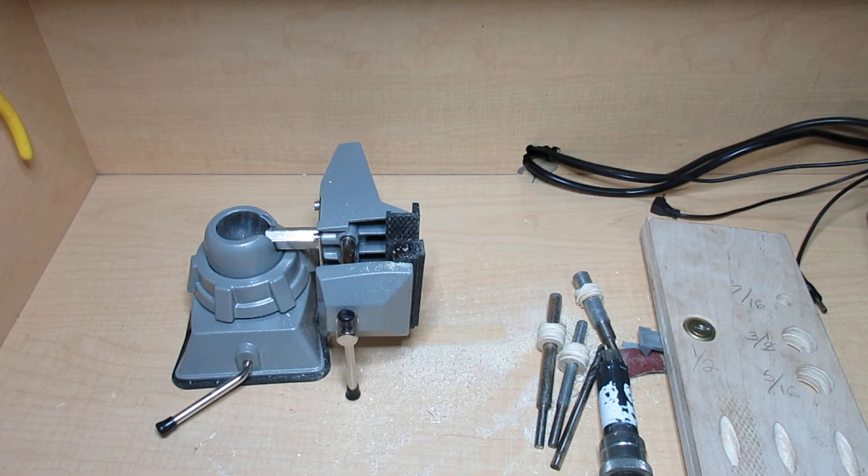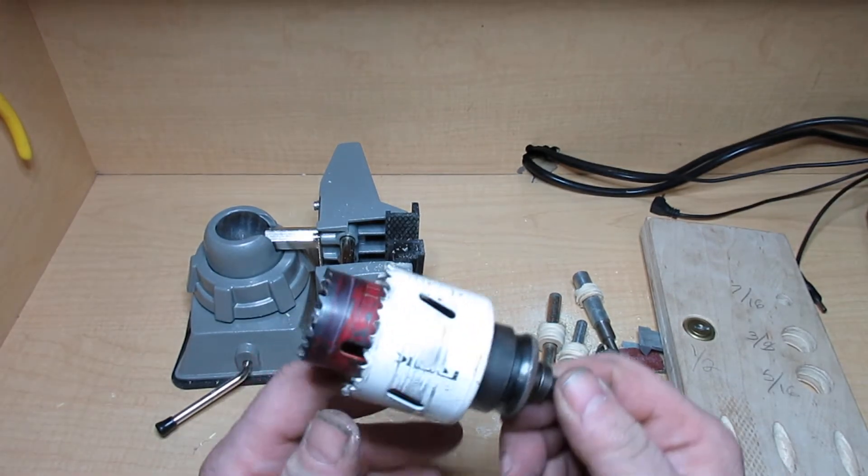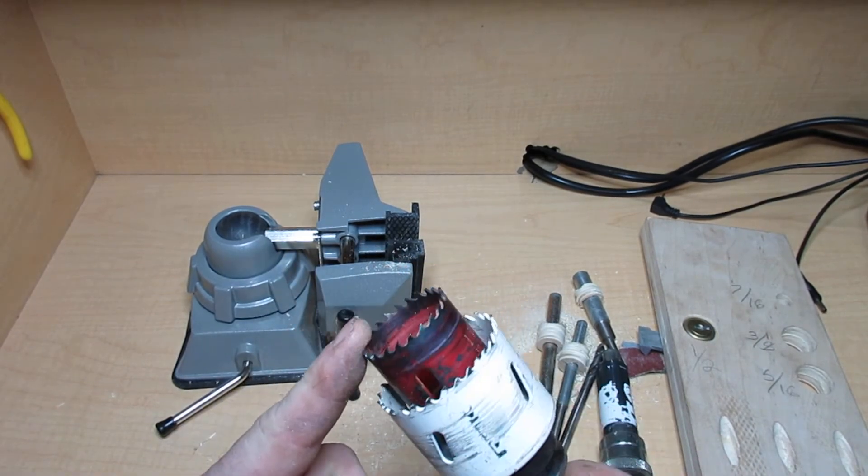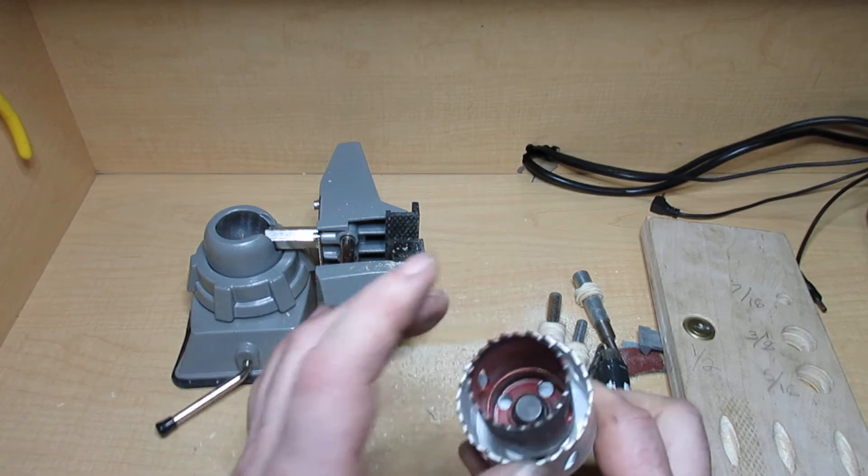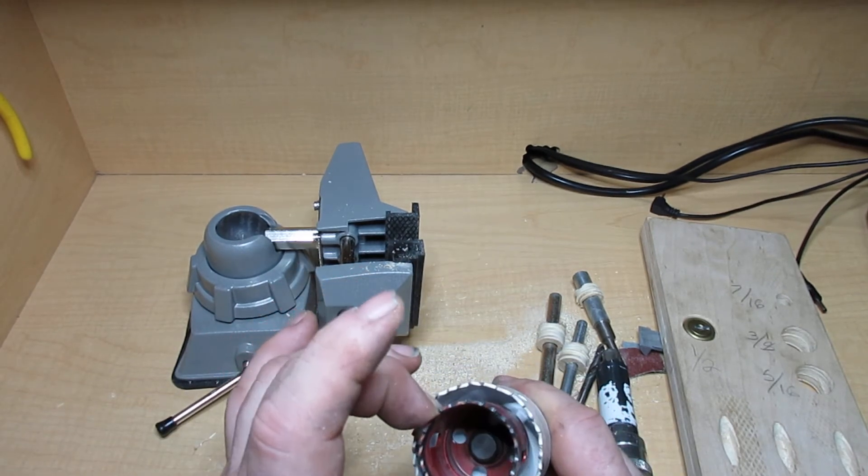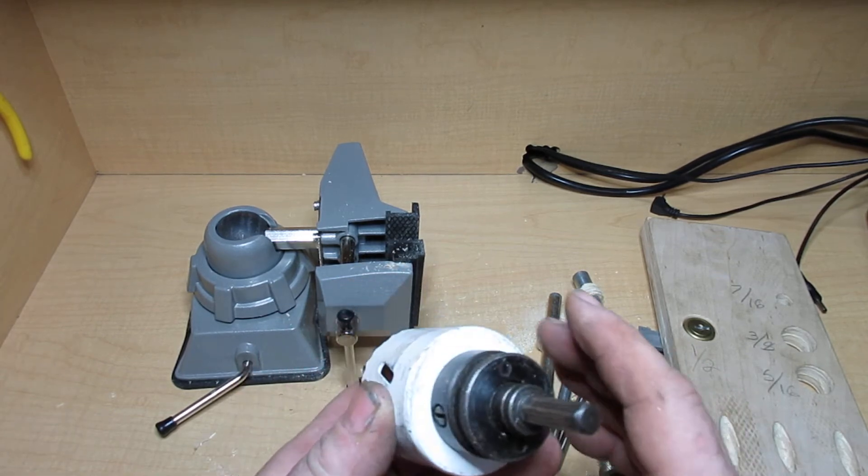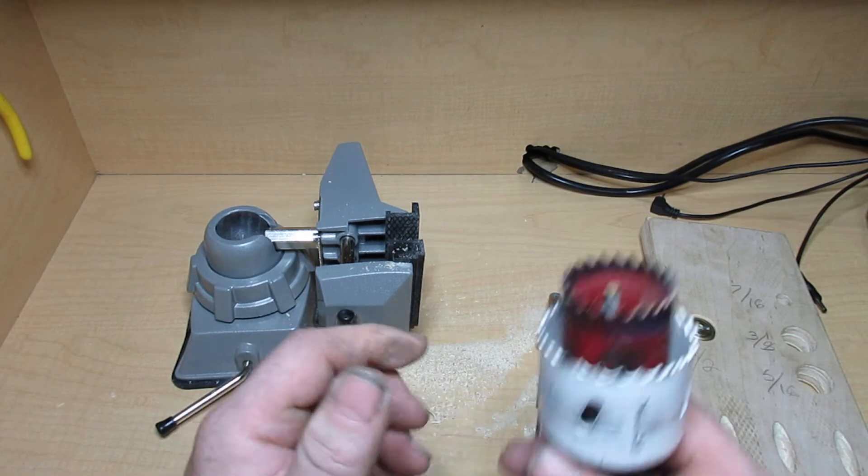In locksmithing, we regularly have to upgrade hardware on doors, deadbolts and other hardware. Used to be our locks were inch and a half diameter deadbolts we would install. Now a lot of the hardware is going to a two and an eighth inch footprint.